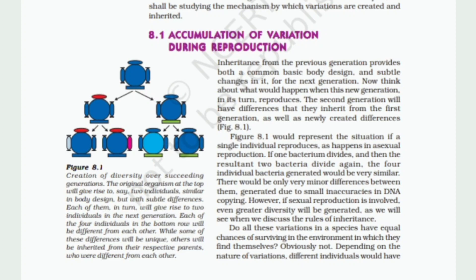If one bacterium divides, and then the resultant two bacteria divide again, the four individual bacteria generated would be very similar. There would be only very minor differences between them, generated due to small inaccuracies in DNA copying. However, if sexual reproduction is involved, even greater diversity will be generated, as we will see when we discuss the rules of inheritance.